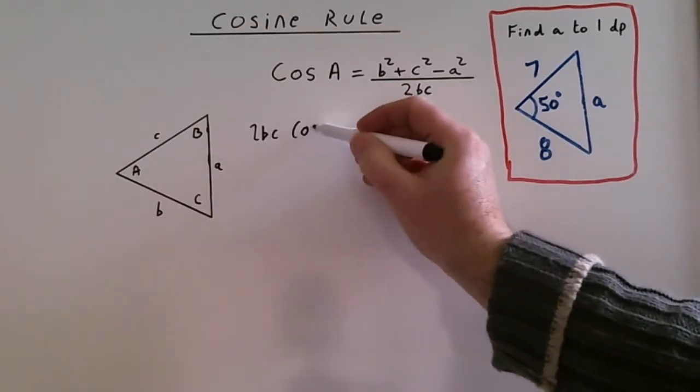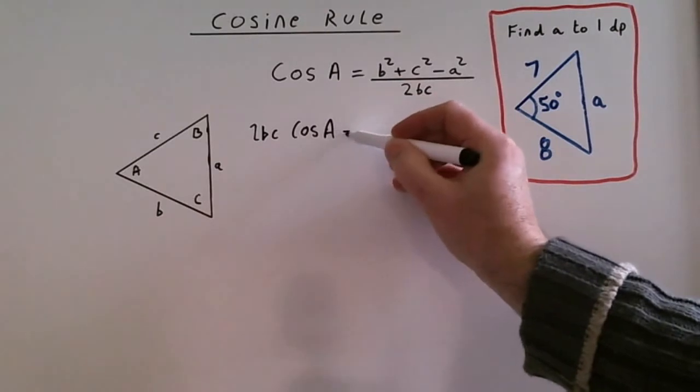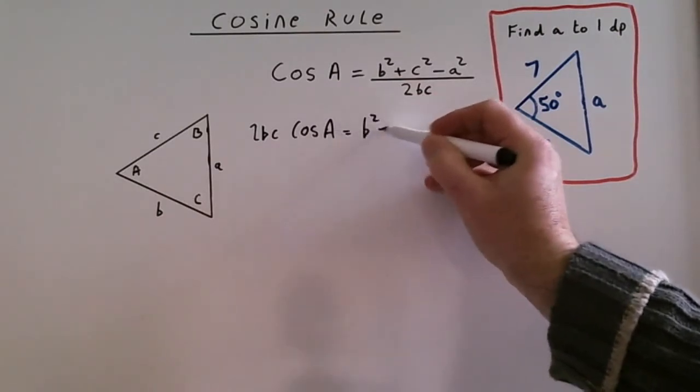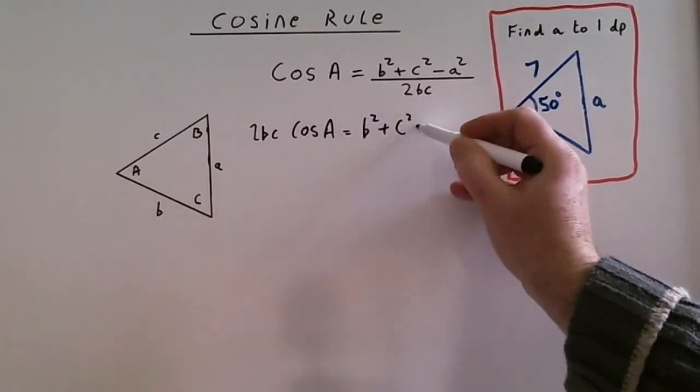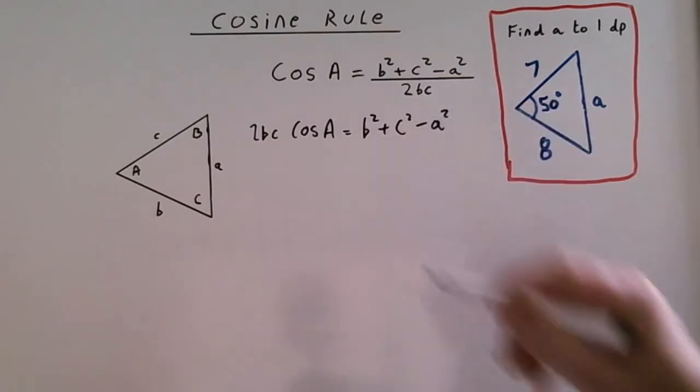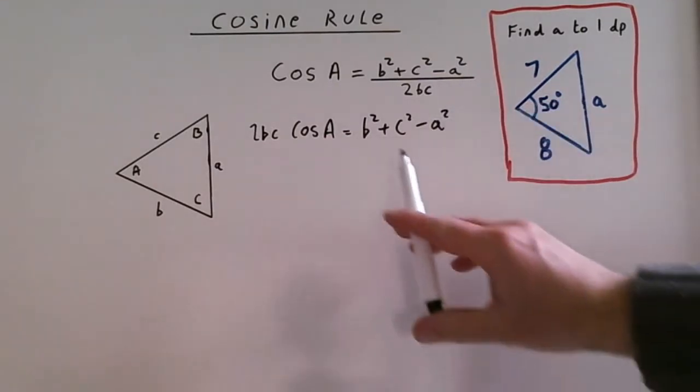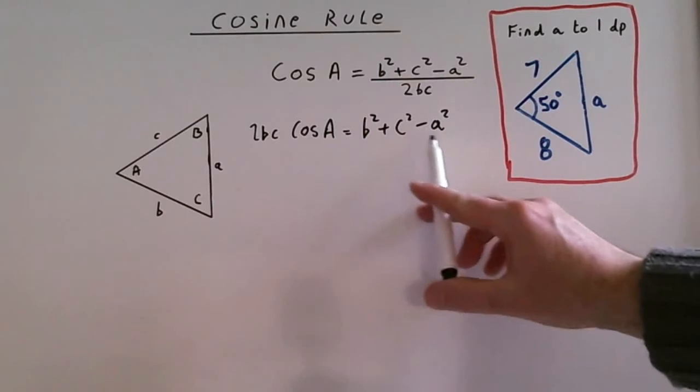2bc cos A equals b squared plus c squared minus a squared. Now I want to get a squared on its own.